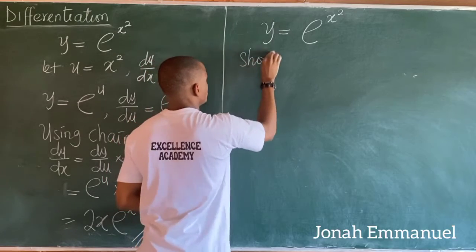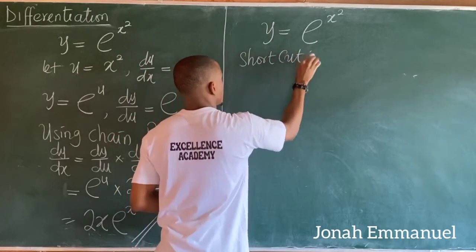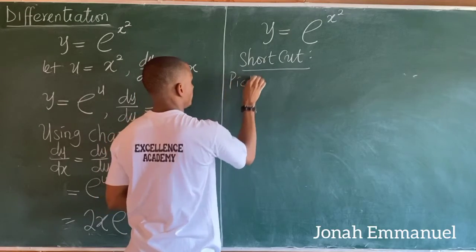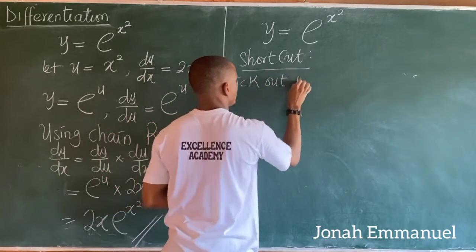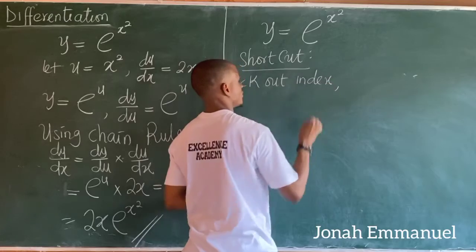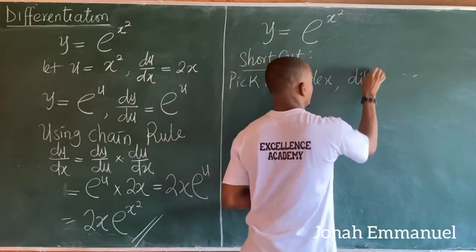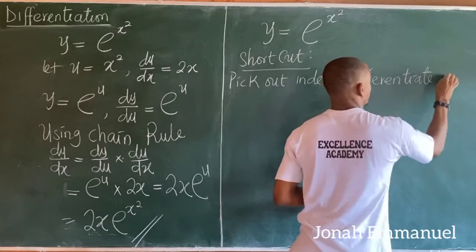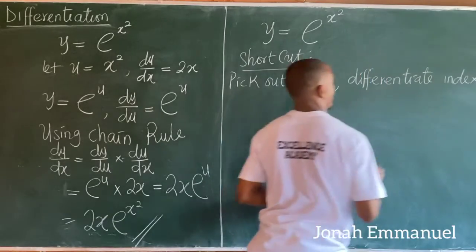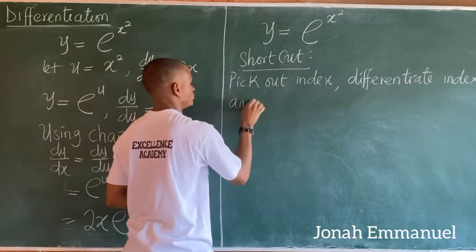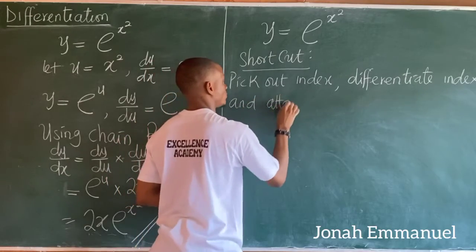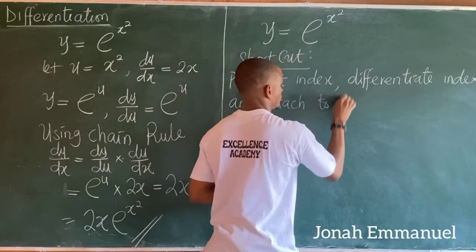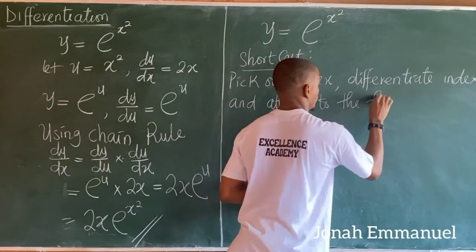Your shortcut is this: pick out the index, differentiate the index, and attach to the function.